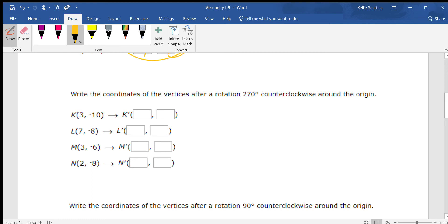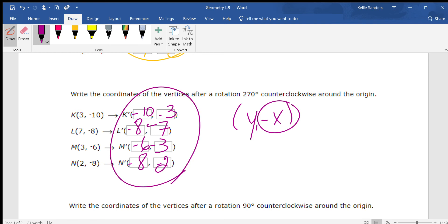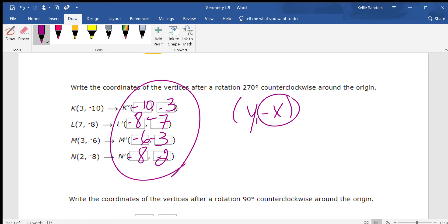270 counterclockwise is y, negative x. So the negative 10, the negative 8, the negative 6, and the negative 8 are there, but then we're going to change the x: so negative 3, negative 7, negative 3, and negative 2. You can do it without even having to.